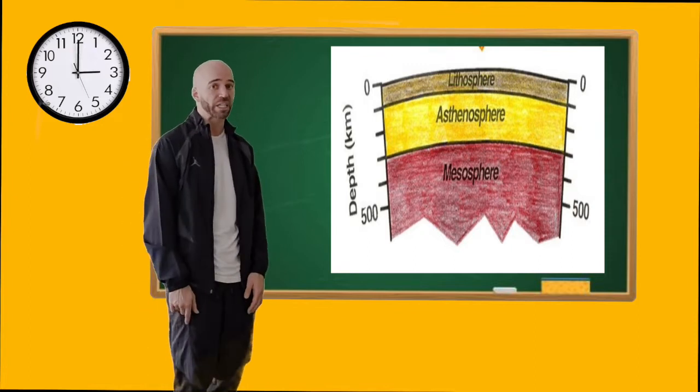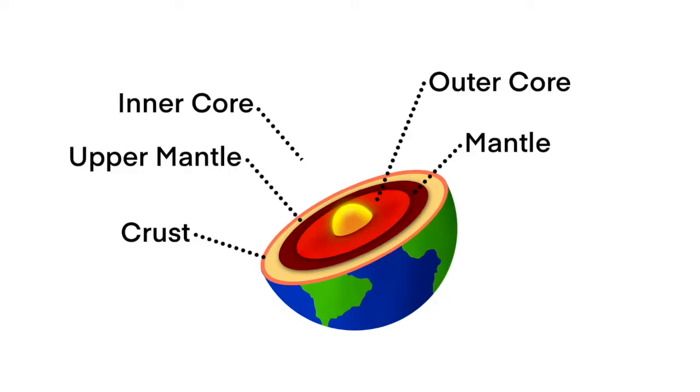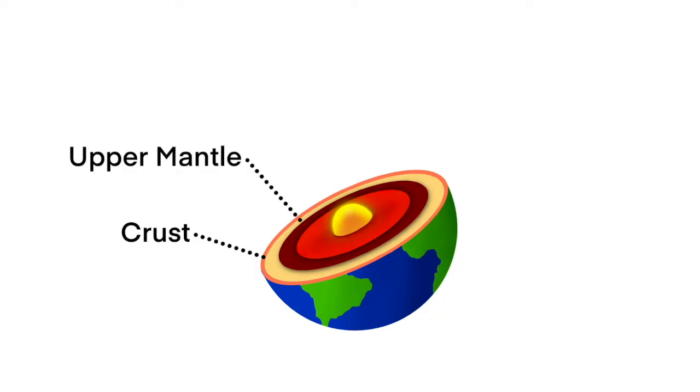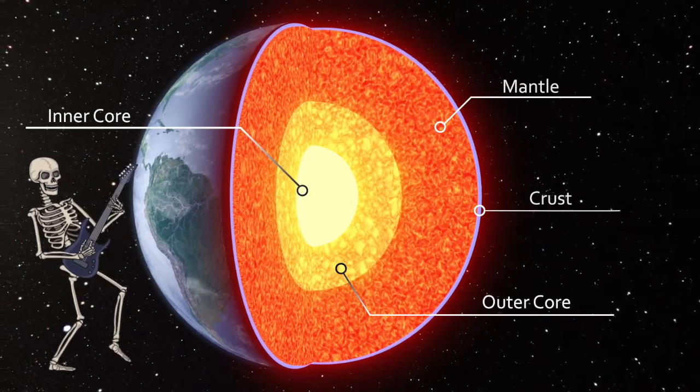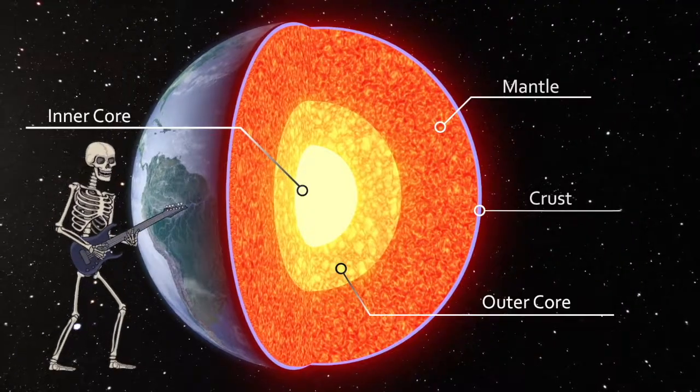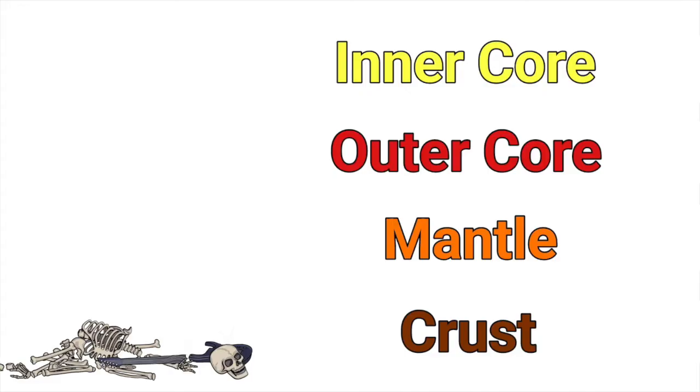Inner core, outer core, mantle, thin crust. That's what it is. Inner core, outer core, mantle, thin crust. Say it with me now. Inner core, outer core, mantle, thin crust.